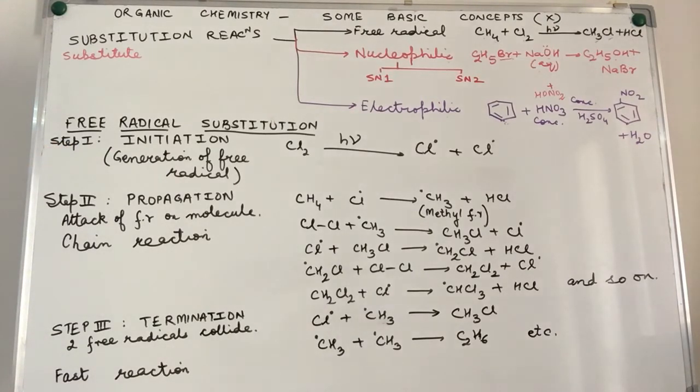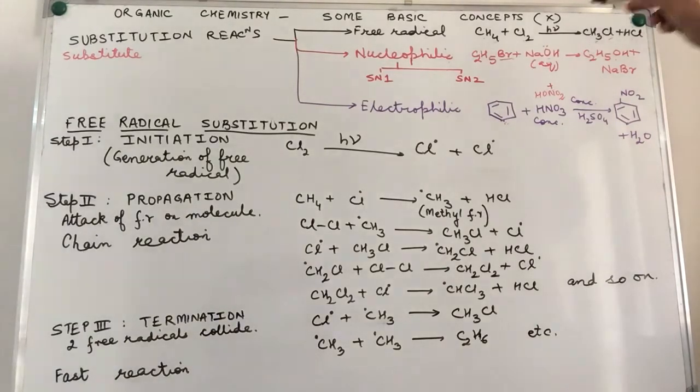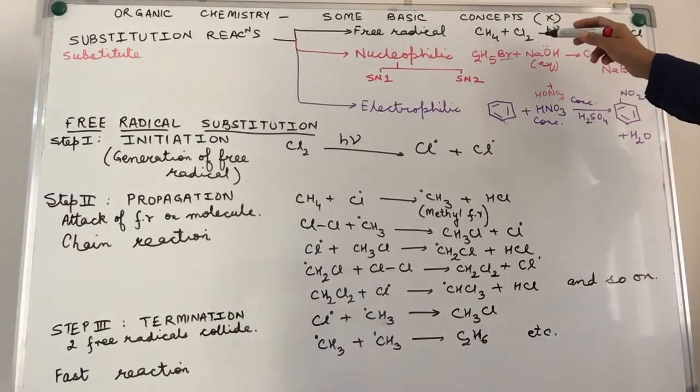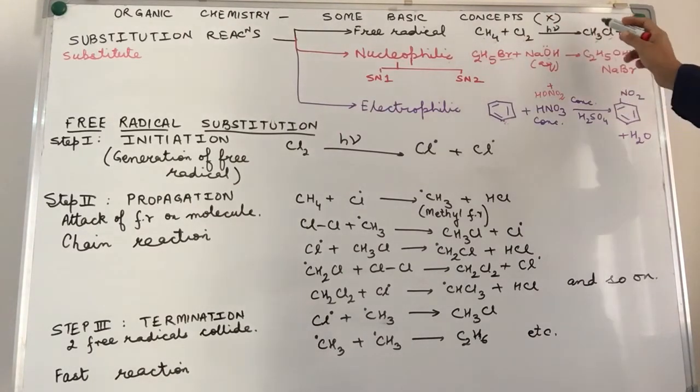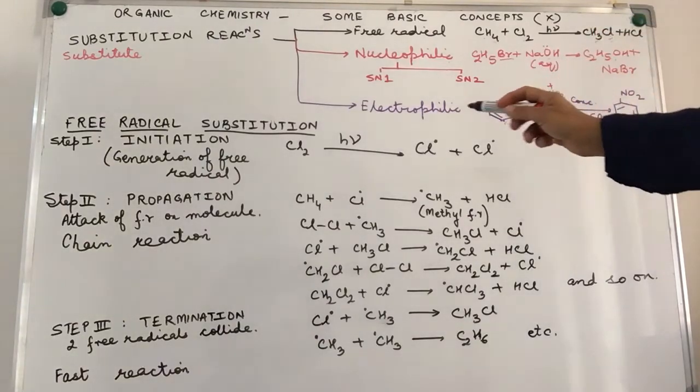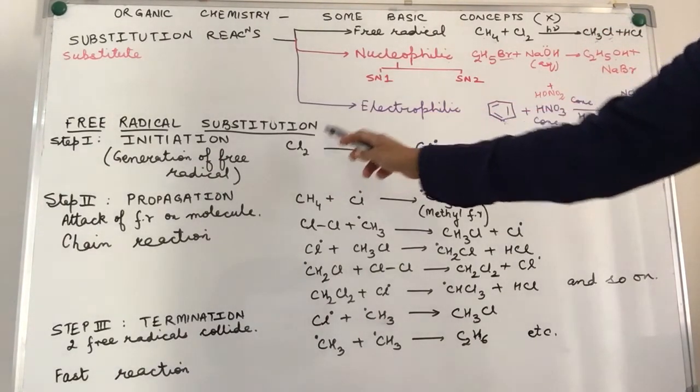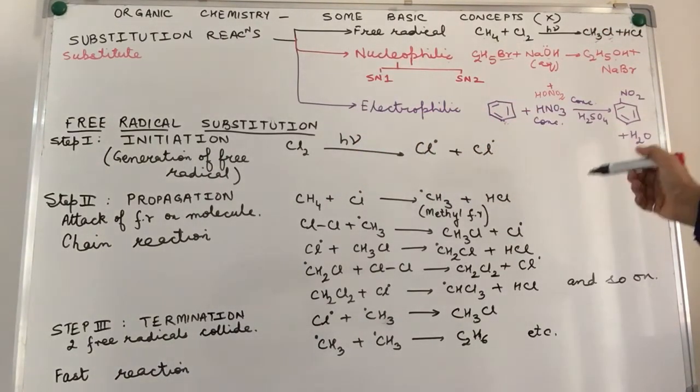Free radical example we have taken is very simple. Simplest example that you would be doing since your class 9th or 10th. Methane plus chlorine gives you chloromethane, that is or methyl chloride. First step, chlorine breaks down to give you chloride free radicals.